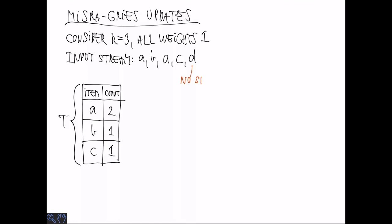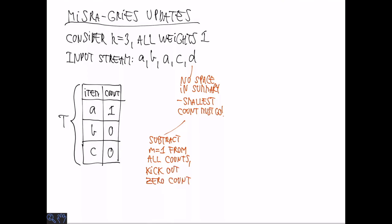Now comes a new element D. There's now no space in the summary to just put in D so we need to do something. What we'll do is to say that the smallest counts must go. This is going to give the smallest error or the smallest difference between what is stored and the true counts. We're going to subtract the minimum count which is 1 from all the counts. So these are the revised counts. And now we can evict or kick out all of the elements with 0 counts. So we do that. We also insert D and kind of for technical reasons we also subtract M from the count of D. So it ends up with a count of 0.